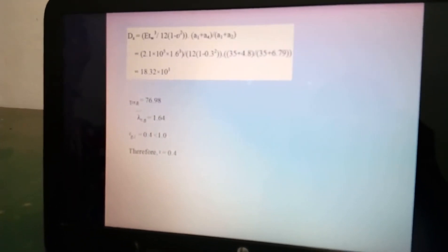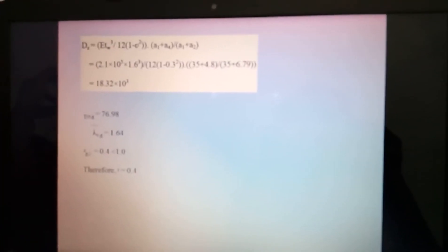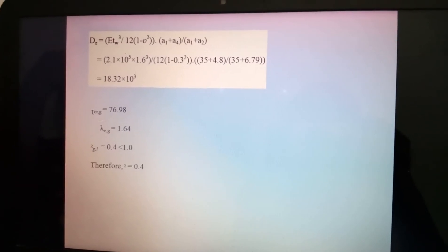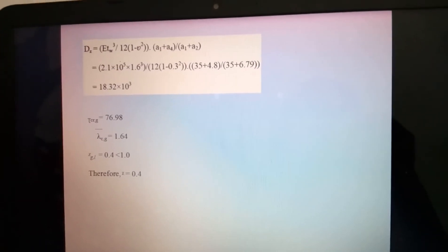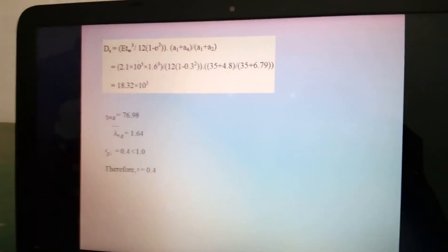For global buckling, all the conditions are satisfied. Sigma bar equals 1.64, sigma xg equals 0.4 which is less than 1. Therefore overall we consider x equals 0.4.